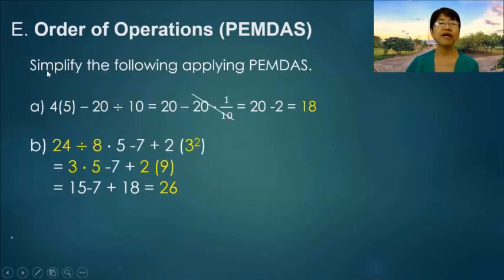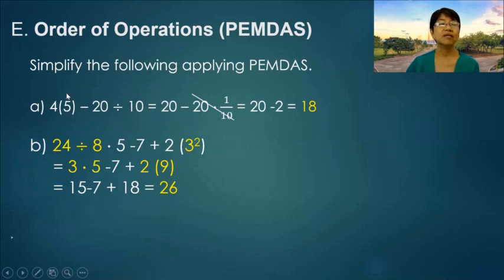Simplify the following applying PEMDAS. Letter A: 4 times 5 minus 20 divided by 10. Since there is multiplication here, we perform the multiplication first: 4 times 5 gives 20. Then we perform the division: 20 divided by 10 gives 2. So 20 minus 2 is 18.